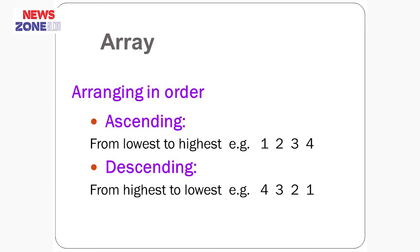First of all, let us see what is array. Array means arranging in order. One is ascending order and another is descending order. Ascending order is from lowest to highest, like 1, 2, 3, 4, and descending order is from highest to lowest, like 4, 3, 2, 1.